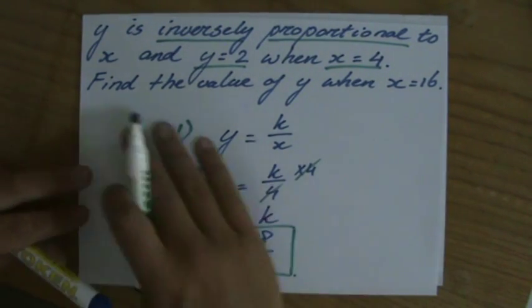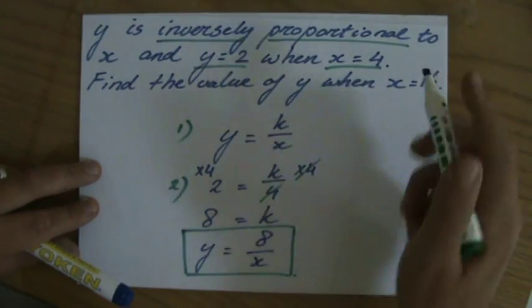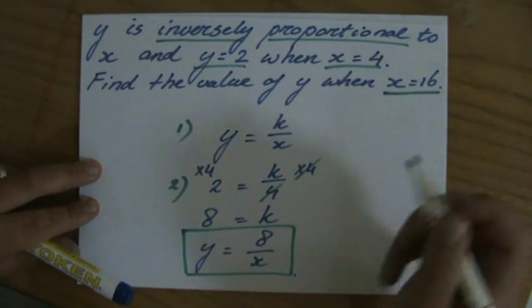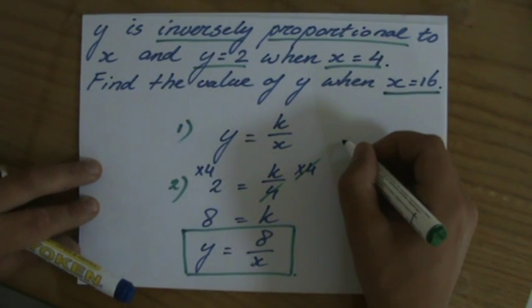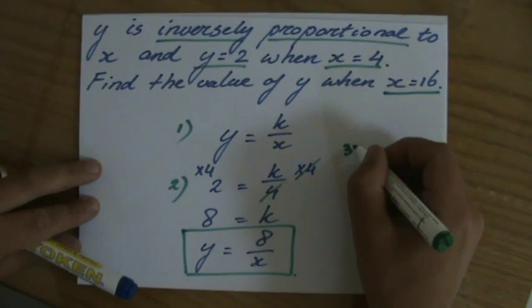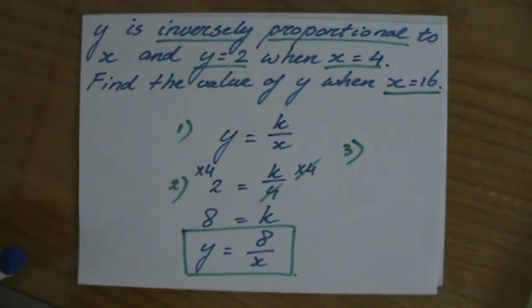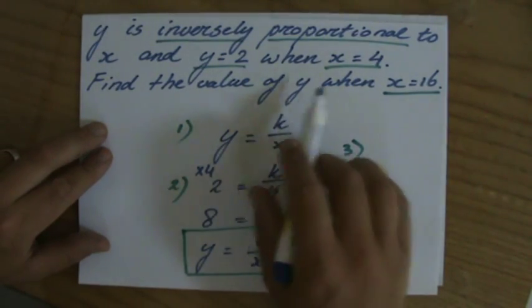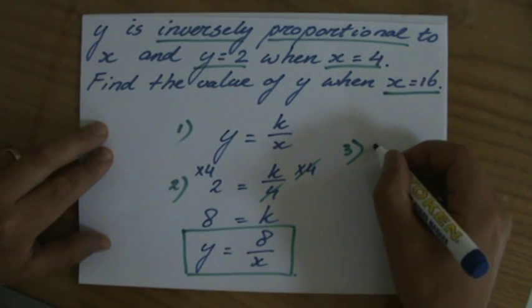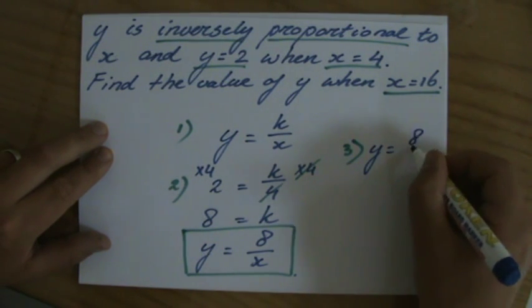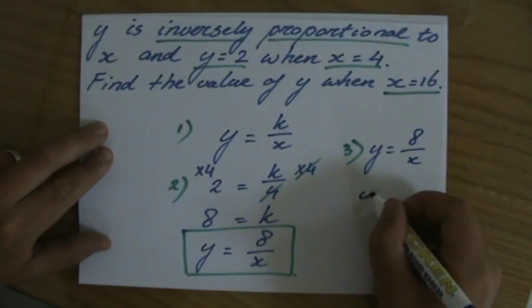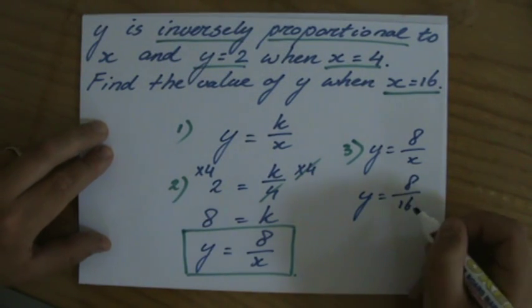I'm not done yet, because they asked me to find the value of y when x is 16. Well, if I continue here, I'll put a little 3 there, my last step. What is y when x is 16? Well, y equals 8 over x, so y equals 8 over 16.